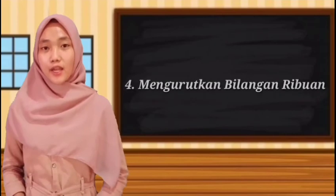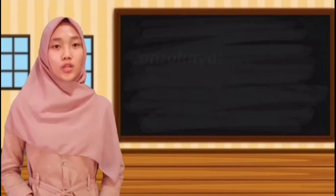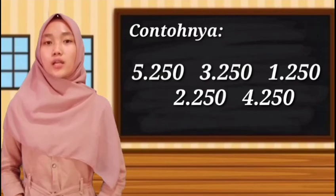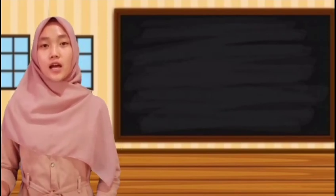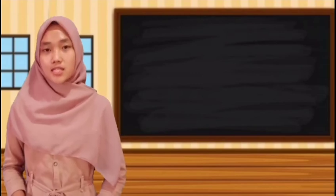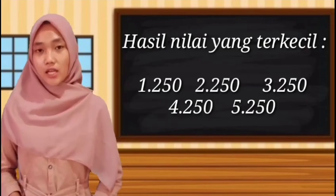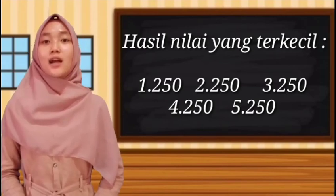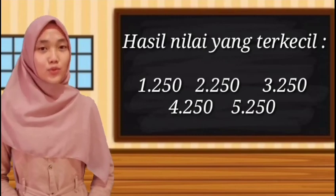Pembahasan yang terakhir yaitu mengurutkan bilangan ribuan dari yang terkecil ke yang terbesar. Contohnya 5.250, 3.250, 1.250, 2.250, dan 4.250. Bilangan ini dalam keadaan acak. Karena instruksinya mengurutkan dari yang terkecil ke yang terbesar, kita pilih nilai yang paling terkecil: 1.250, 2.250, 3.250, 4.250, dan 5.250.